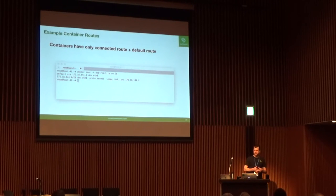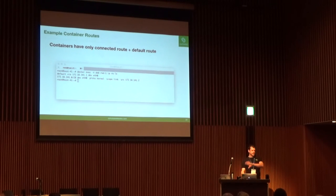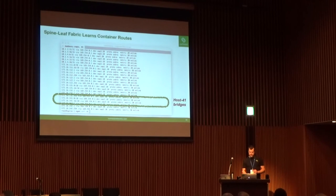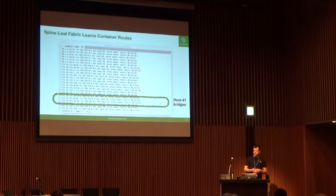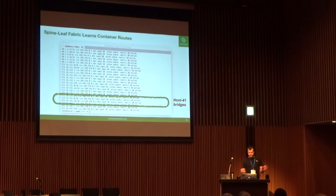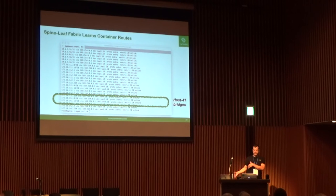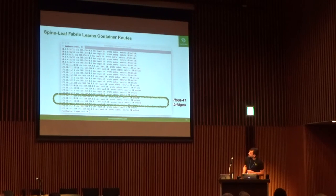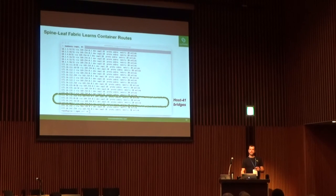Inside the container, the networking is fairly simplistic — it has an address and uses the host as its default gateway. Not much knowledge is inside the container. Here's an example of the fabric learning one of the routes as I start up a container. In this case it's host 41, started up a container in VRF red. When I started that container on the host, the spine learned it automatically. Also, I have management VRF running on all the nodes — I can't get management VRF running on the server yet until we figure out the VRF helper for setting VRF context, but we'll get there.